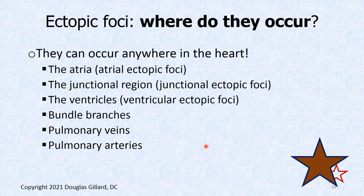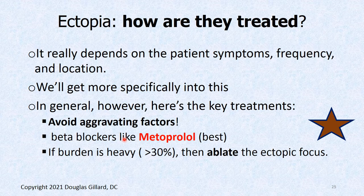Where do ectopic beats occur? They can occur anywhere in the heart: the atria, the ventricles, especially the junctional region, the bundle branches, and the pulmonary veins — it's very common for them to occur at the roots of the pulmonary veins, and pulmonary arteries as well. How do you treat them? It really depends on the frequency and whether the patient is symptomatic. Most of the time you don't need any treatment. They're super common in all humans — probably 85% of people listening have had a skipped heartbeat.